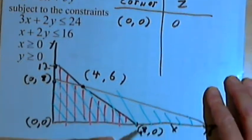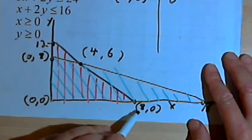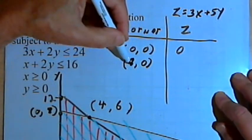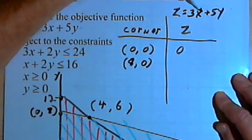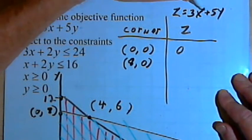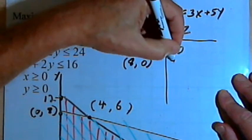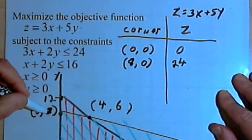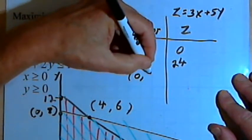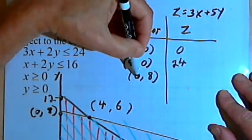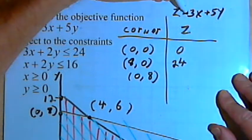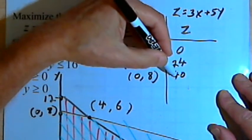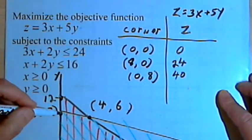Let's go to the x-intercept at 8, 0. At that corner, x equals 8 and y equals 0. If x is 8, 3 times 8 is 24, plus 5 times 0 is 0, so z would be 24. At the y-intercept, the coordinates were 0, 8. x is 0, so 3 times 0 is 0. y is 8, so 5 times 8 is 40. The z value for that point would be 40.